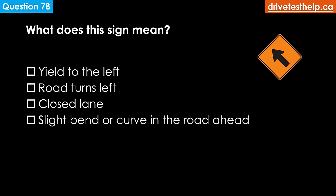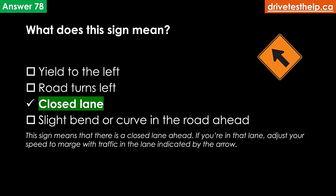What does this sign mean? Options: yield to the left; road turns left; closed lane; slight bend or curve in the road ahead. The correct answer is closed lane. This sign means that there is a closed lane ahead. If you are in that lane, adjust your speed to merge with traffic in the lane indicated by the arrow.